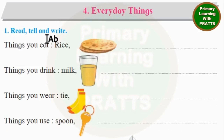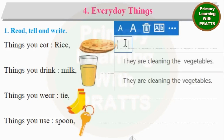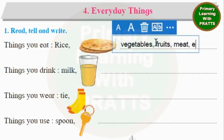Read, tell and write things you eat. They have given us examples: Rice and Roti, and we will add to it. You can write Vegetables, Fruits, Meat if you like eating meat, Eggs, Cake, and Pastries. I am giving you examples so you can choose and write whichever you like.